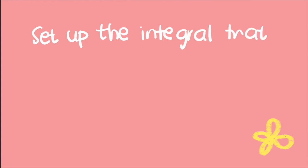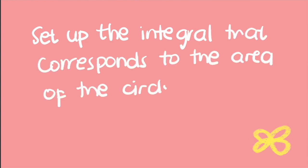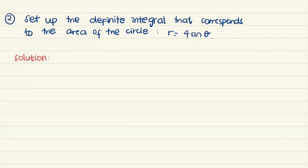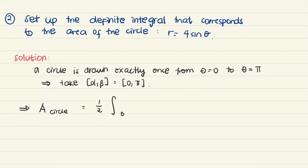Next, we need to set up the definite integral that corresponds to the area of the circle given by r equals 4 sine theta. Note that a circle of this type is drawn exactly once on the interval 0 to pi, so we use that interval for integration. The area of the circle is just 1 half the integral from 0 to pi of 4 sine theta quantity squared d theta.